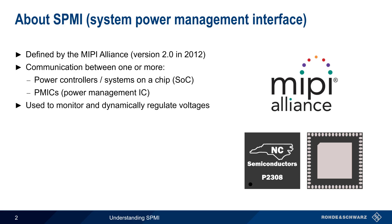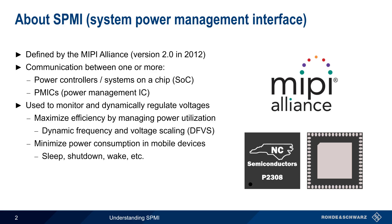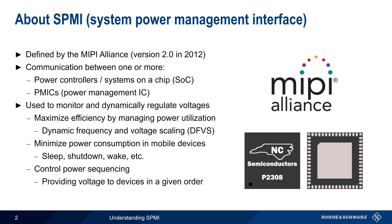SPMI can be used to both monitor and dynamically regulate voltages, which is important in three main areas. The first is maximizing efficiency by managing power utilization — for example, by dynamically changing voltage and current levels to match processor performance requirements. You may hear this referred to as dynamic frequency and voltage scaling. SPMI also natively supports commands for minimizing power consumption in mobile devices by moving systems or subsystems in and out of low power modes. A third important function of SPMI is controlling power sequencing — that is, providing voltage to devices in a given order, or in a sequence with specific timing.